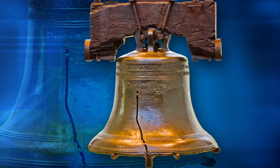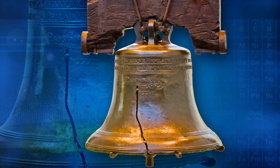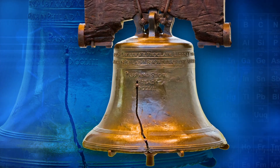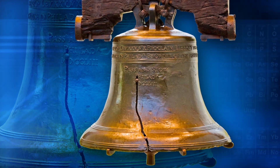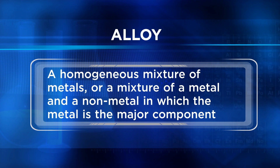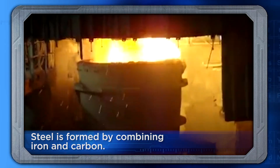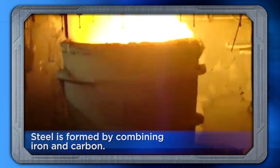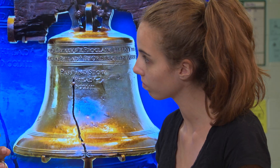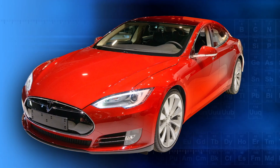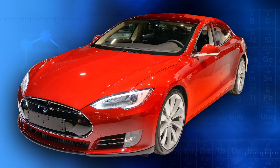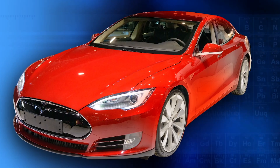Another example of a solid-solid solution is the Liberty Bell in Philadelphia. It's made mostly of copper and tin, but also lead, zinc, arsenic, gold, and silver. A mixture like that is called an alloy. Alloys are a homogeneous mixture of metals, or a mixture of a metal and a nonmetal in which the metal is the major component. Steel can be a mixture of iron and carbon — adding carbon atoms increases its hardness. Manufacturers combine properties of various metals into an alloy to achieve greater strength and durability. Car companies such as Tesla use alloys to build a strong car that can survive a crash impact while reducing vehicle weight.